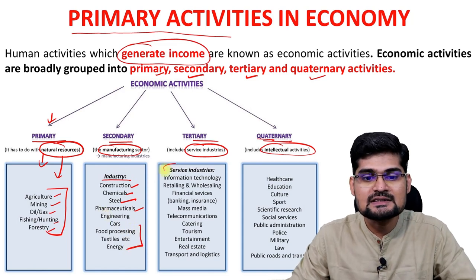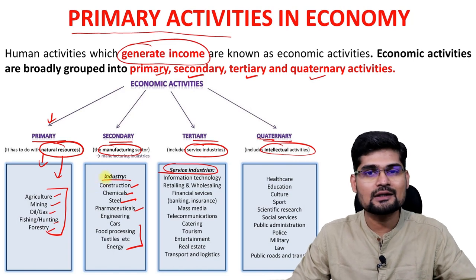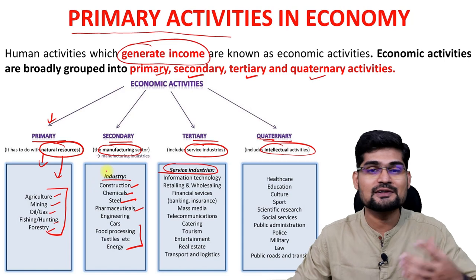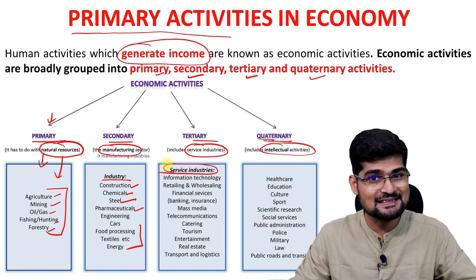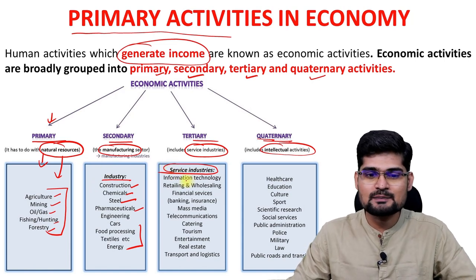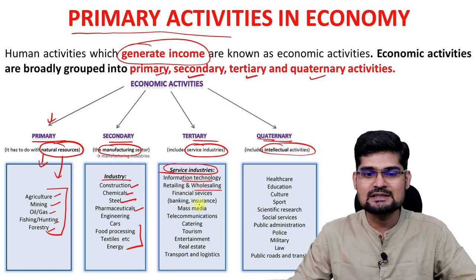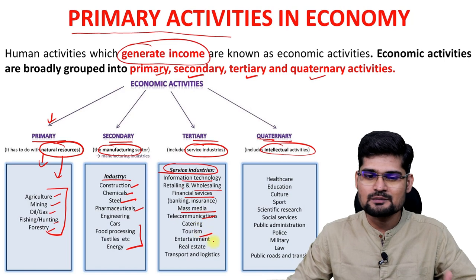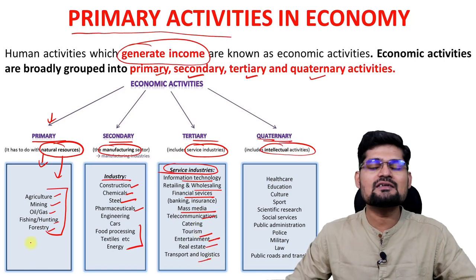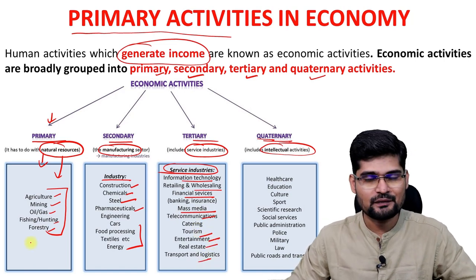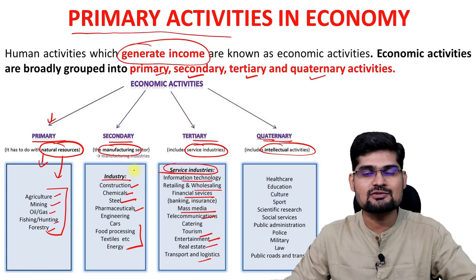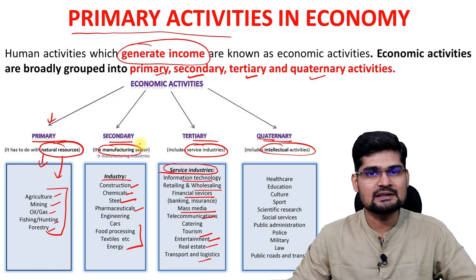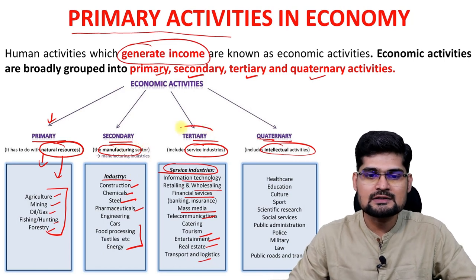Then comes the service industry. As we know, during the lockdown and the pandemic, the service industry is what we were all dependent upon for doorstep delivery and several other services. So we know that it is based on IT, information technology, retailing and wholesaling, financial services, mass media, telecommunications, tourism, entertainment, real estate, and several other different kinds of industries. Remember, it's all tertiary.